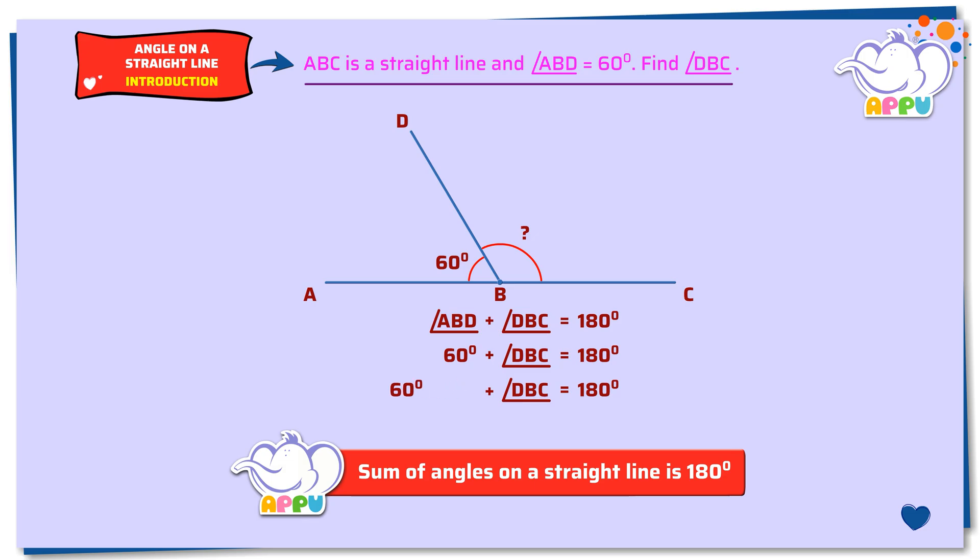Next, we subtract 60 degrees from both sides. We get angle DBC equals 180 degrees minus 60 degrees, that is equal to 120 degrees. Angle DBC equals 120 degrees.